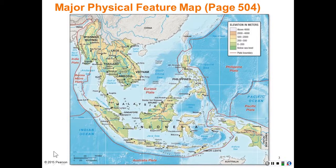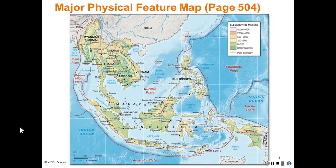Looking at this map in general, this region is in the Pacific Ring of Fire — a region of tectonic plate activity where a number of plates come together: the Indian plate, the Eurasian plate, the Australian plate, the Philippines plate, and the Pacific plate. Their convergence creates a region of tectonic activity, earthquakes, and occasional tsunamis that devastate places within our region.